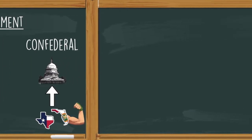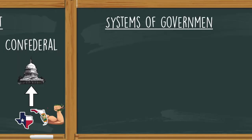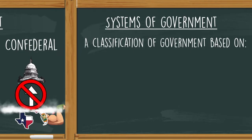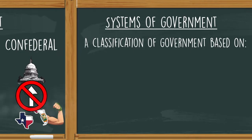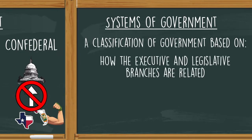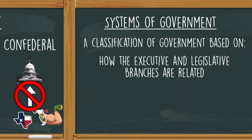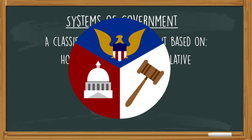Unfortunately, there's more — and you knew it couldn't be this easy with only three things. There is another classification for systems of government that is not based on the central and regional government's relationship. The other way to do it is looking at the executive and legislative branch and their relationship, and we're going to get into that right now.